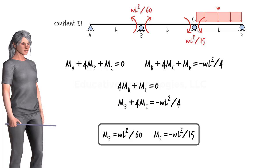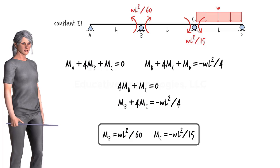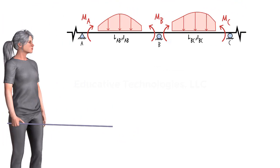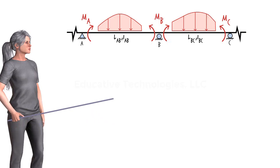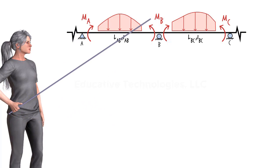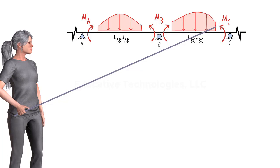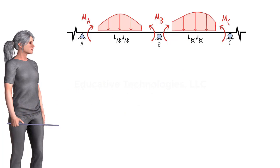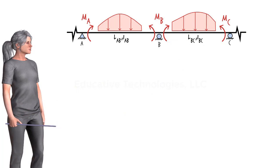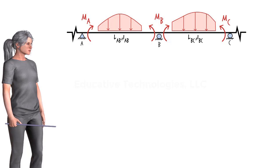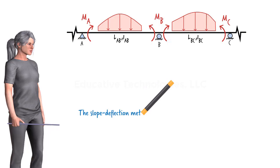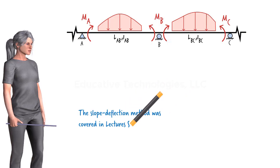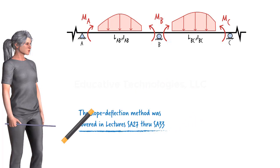Now that we have a basic understanding of the form and function of the three-moment equation, let's derive its general form for analyzing various beams. Consider a two-span beam segment with moments at three consecutive points labeled accordingly. We are going to use the slope-deflection formulation. If you're not familiar with the slope-deflection method, please review video lectures 27 through 33.